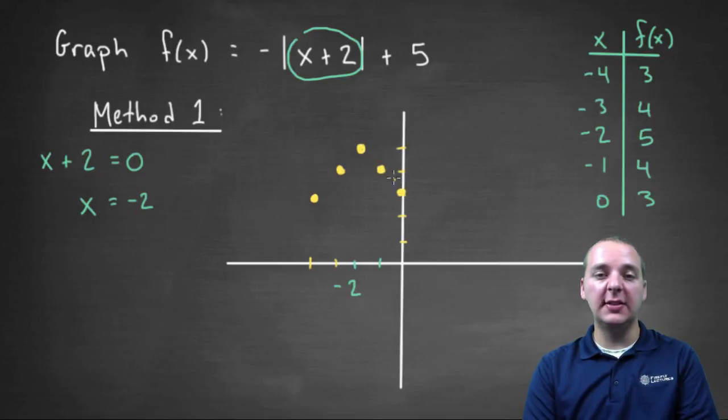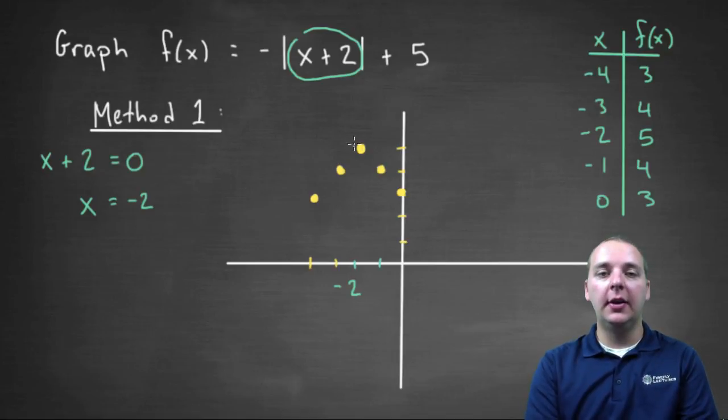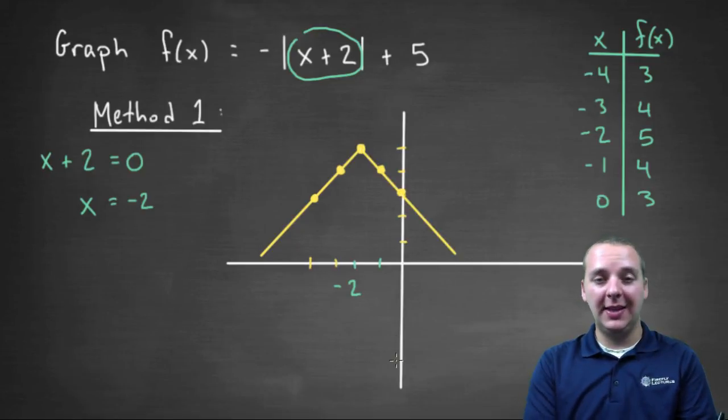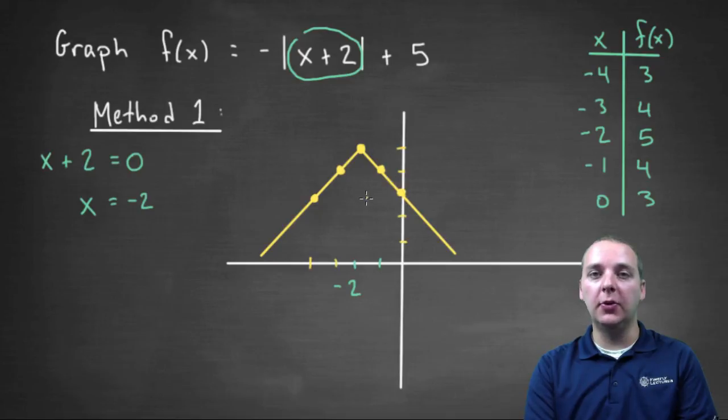And you see, we can start to see what the absolute value graph is going to look like, and sure enough the vertex is in fact at negative two, so everything is looking pretty good. So for a final answer, all I would do is connect all these dots and draw my normal V-shape graph. And that yellow graph right there is the graph of this absolute value function.